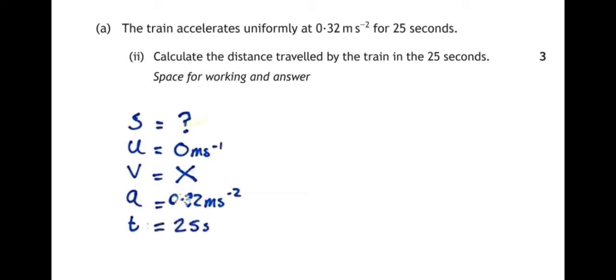So now that I've got this written down, I can see I want to know S and I've got U, A, and T. So I look in my formula sheet and I look for an equation that contains S, U, A, and T, and I find this one. S equals UT plus a half AT squared.